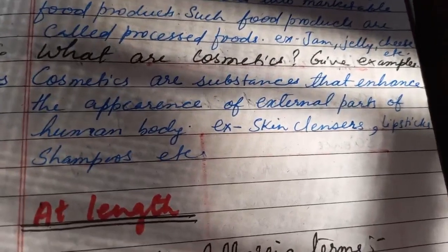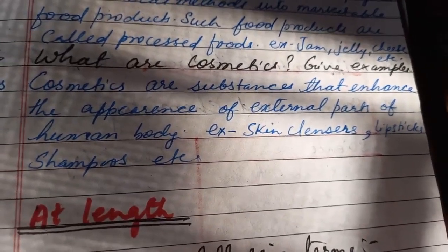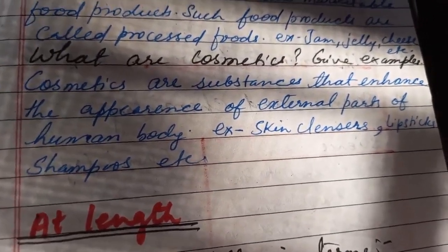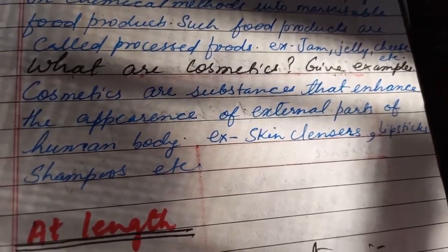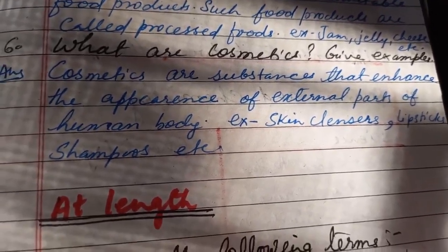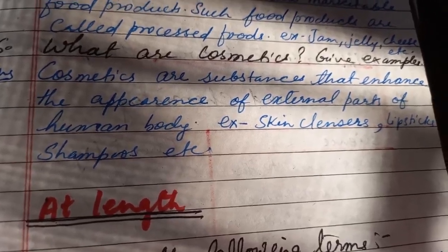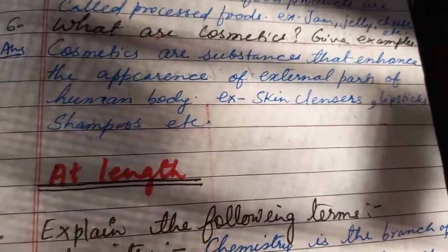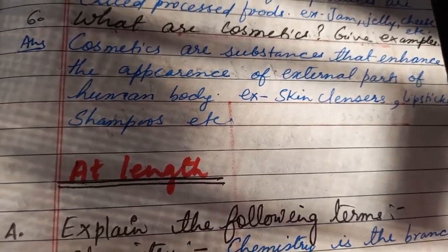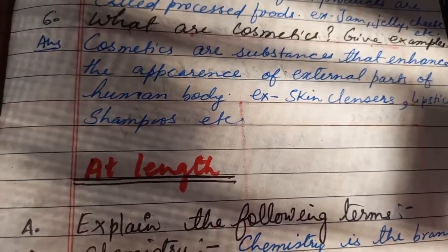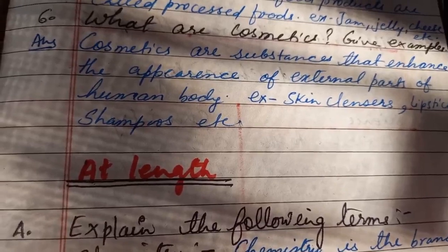Now come to the next question: What are cosmetics? Give examples. You will write: cosmetics are substances that enhance the appearance of external parts of human body. Example: skin cleansers, lipsticks, shampoos, soaps, talcum powders, etc. You can give any two examples.